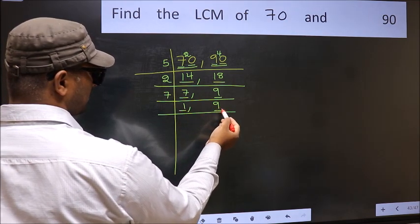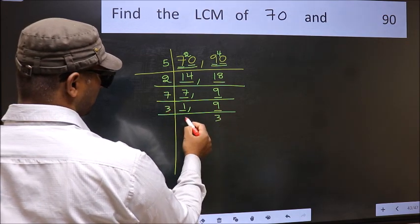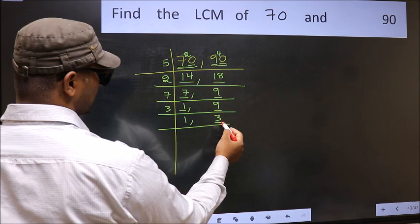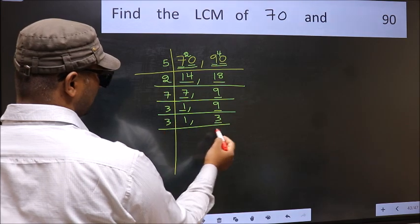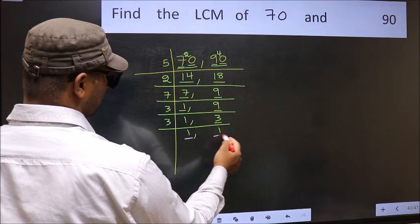Now we got 1 here, so focus on the next number 9. 9 is 3, 3 is 9. Now we have 3. 3 is a prime number, so 3, 1 is 3. So we got 1 in both the places.